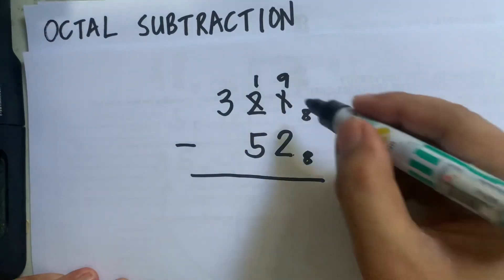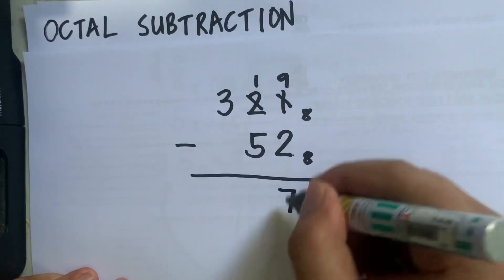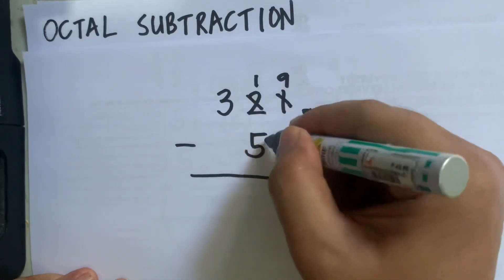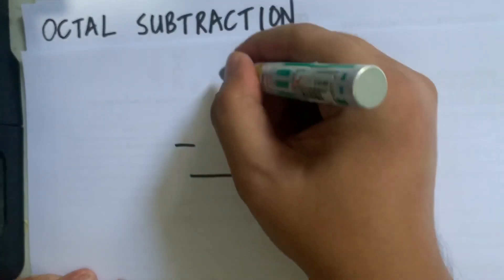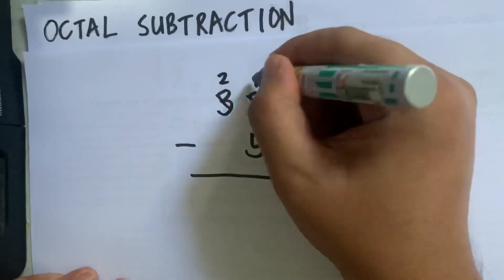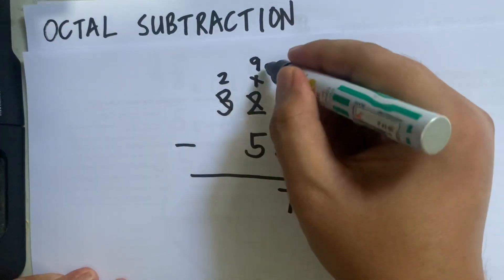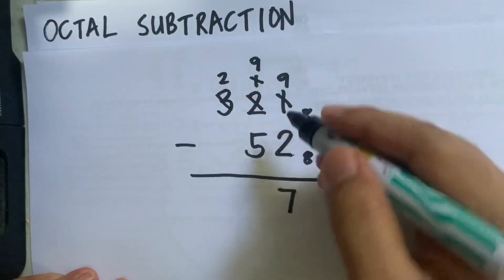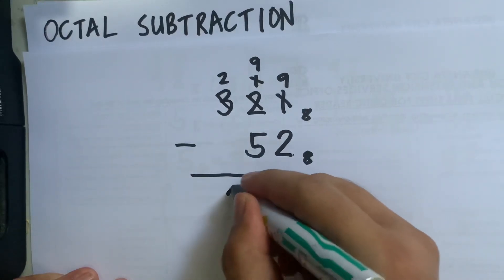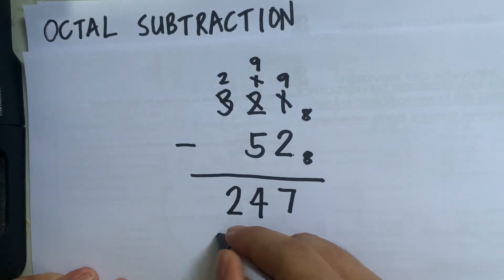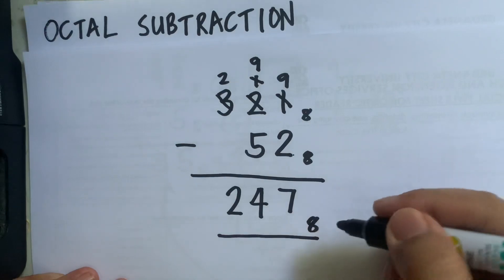Then 9 minus 2 is 7. Next, 1 minus 5 — cannot be done — so 1 will borrow 1 from 3, making 3 become 2 and 1 become 9. Then 9 minus 5 is 4, bring down 2, so the final answer is 247.